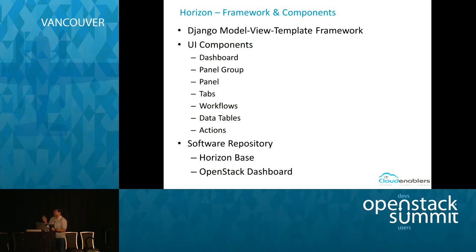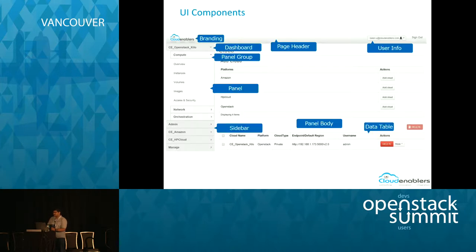A brief look at the different UI components in Horizon: you have dashboards, panel groups, panels, tabs, workflows, data tables, and actions you can perform on them. In the software repository, you have the Horizon base class which is inherited by the OpenStack dashboard — the Horizon you see and use. In the UI, dashboards are at the top level, with panel groups, the different panels, data tables, and so on.